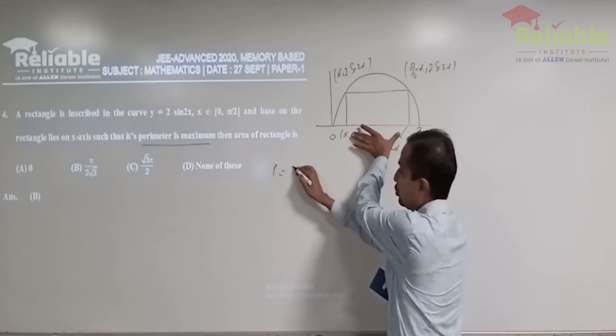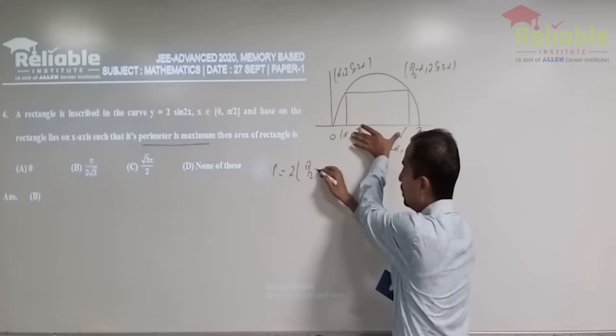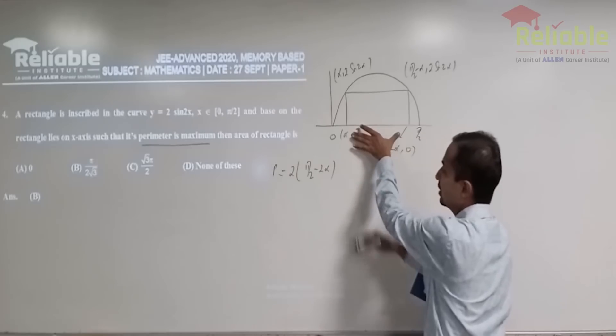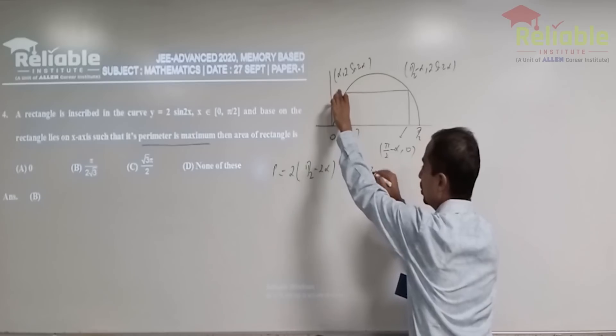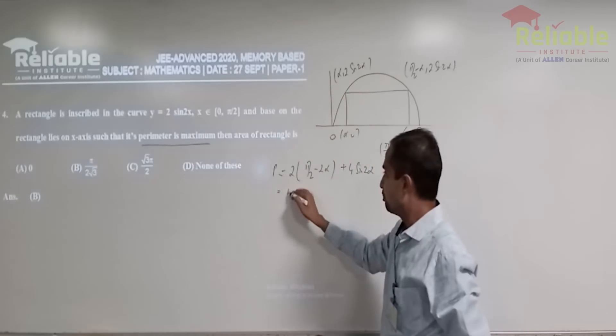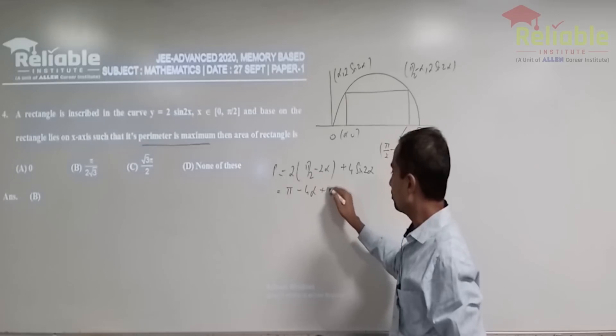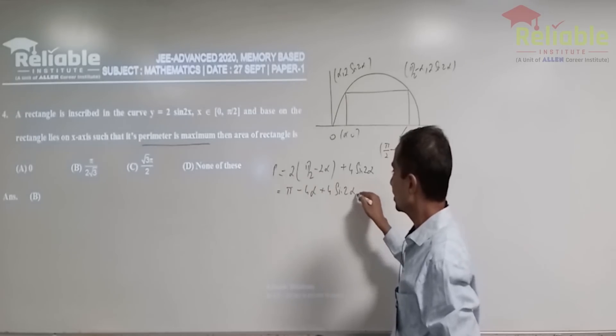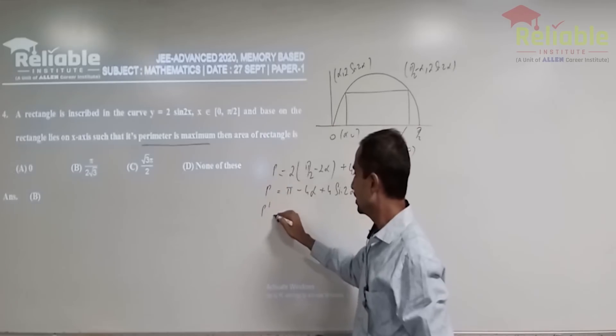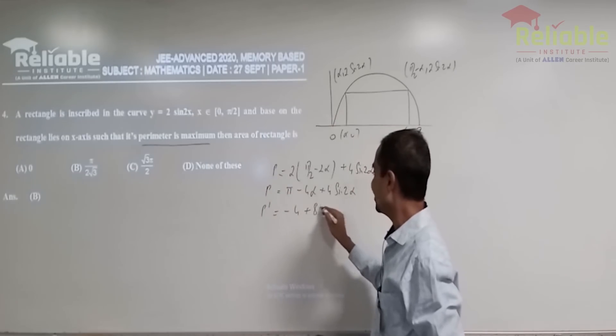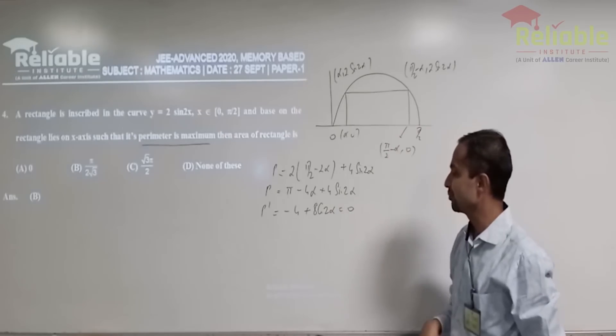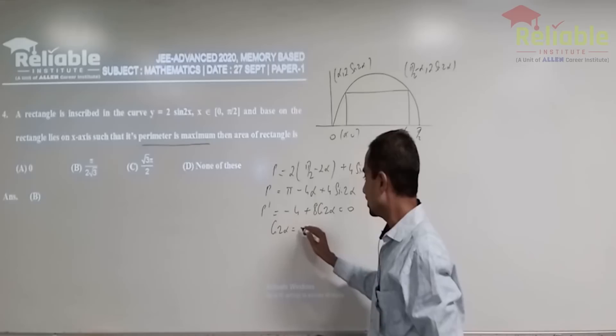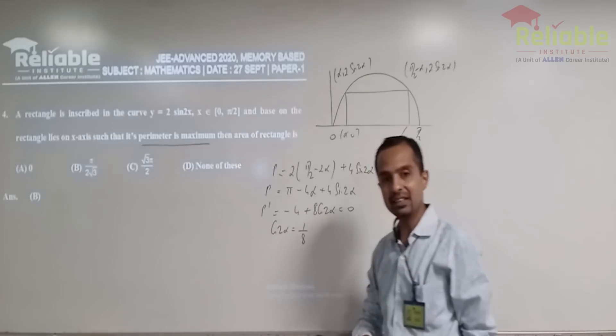So, what would be the parameter? Twice of this, twice of pi by two minus two alpha, plus twice of that is four sine two alpha. So, pi minus four alpha plus four sine two alpha. Let's differentiate this one. So, what you're going to get is minus four plus eight cos two alpha. Now, this is equal to zero. So, cos two alpha becomes one half.